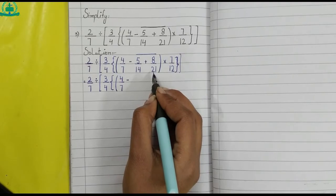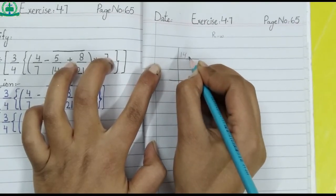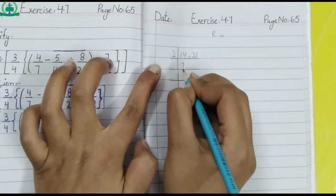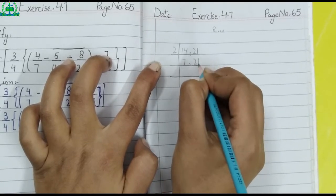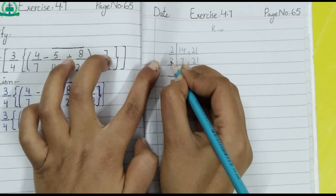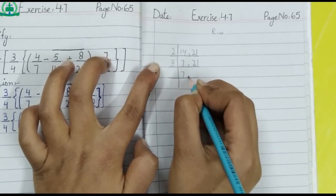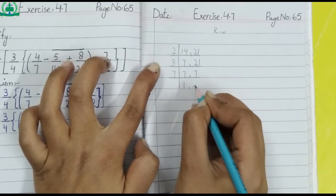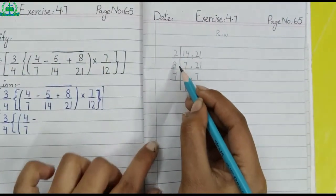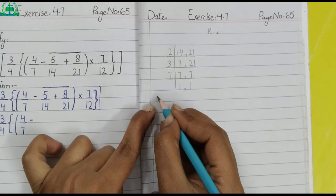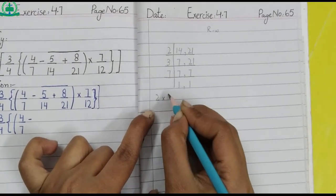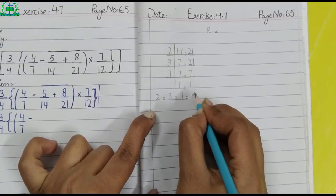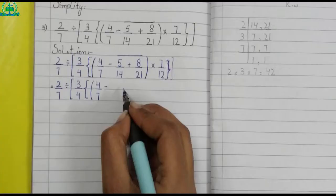Rough work: LCM of 14 and 21. Two sevens of 14, 21 as it is. Seven as it is, three sevens of 21. Seven seven once a seven. We multiply all the factors of 14 and 21: multiply by three, multiply by seven. Three sevens make 21, multiply by three, seven makes 42.